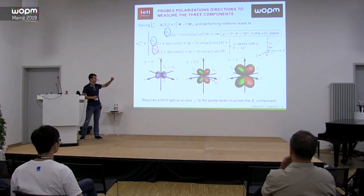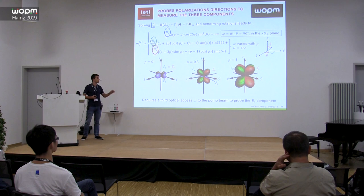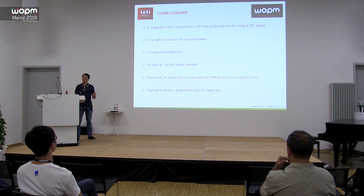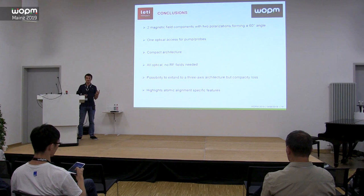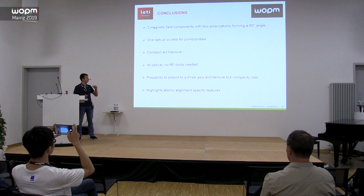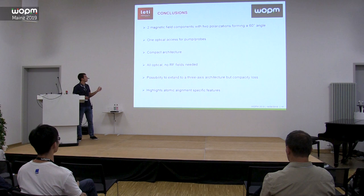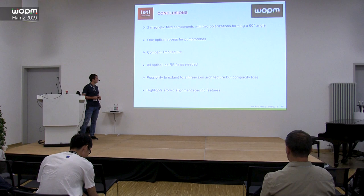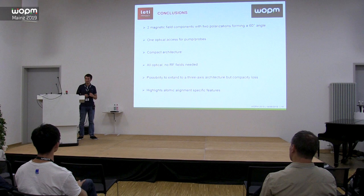The main drawback of building such an architecture is that you may lose the compactness we found for the dual-axis because you need a third beam propagating orthogonally to the pumping beam to probe the last component of the magnetic field. In conclusion, we performed a study about the dynamics of aligned states in atoms, and this led us to design a magnetometer architecture that allows probing two components of the magnetic field with two probe polarizations forming a 60-degree angle. Since we can combine the two probes in one beam and the pumping beam forms a small angle with it, we can send the two beams through the same optical axis, making a compact, all-optical architecture that does not require radio-frequency fields. There is a possibility to extend it to a three-axis magnetometer, but compactness may be reduced. This work highlights atomic alignment-specific and surprising features that may open new interesting architectures for atomic magnetometry.